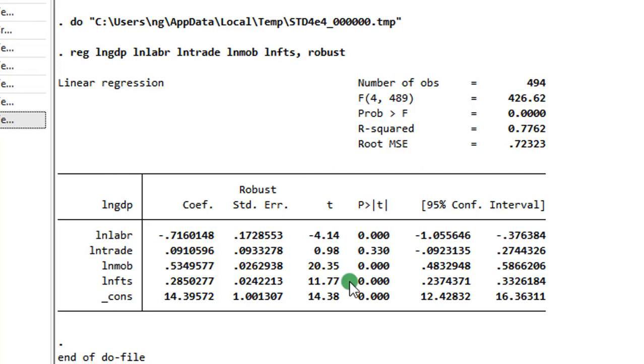Out of the four regressors, only trade is not significant. The other three are statistically significant at the 1% level and labor is negative.